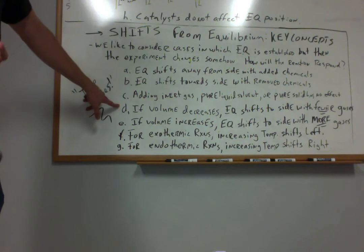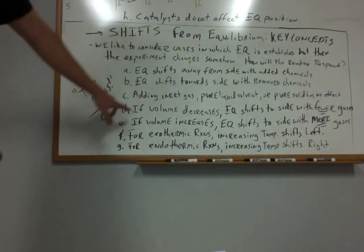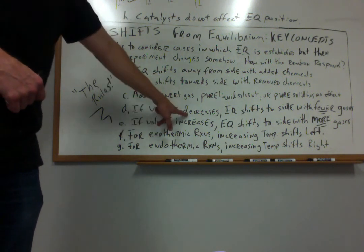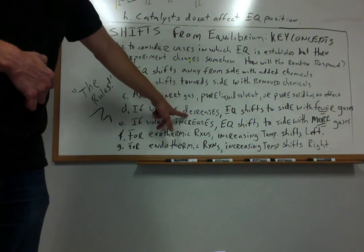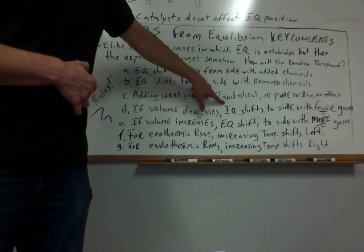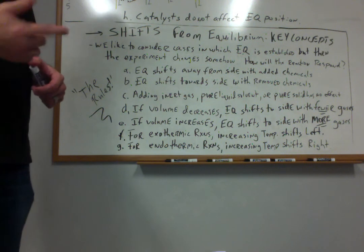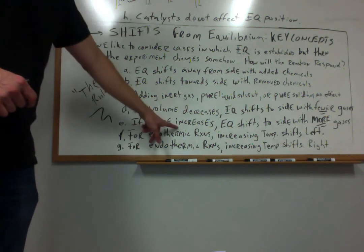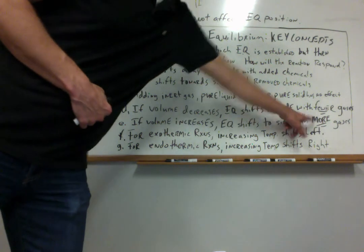Rule D: for gas phase reactions where reactants and products are in the gas phase, if the volume of the container decreases — say you establish equilibrium in a syringe and depress the plunger — the equilibrium is going to shift towards the side with fewer moles of gases in the balanced chemical equation. Rule E: if the volume of the reaction system increases, the equilibrium is going to shift towards the side with more moles of gases.